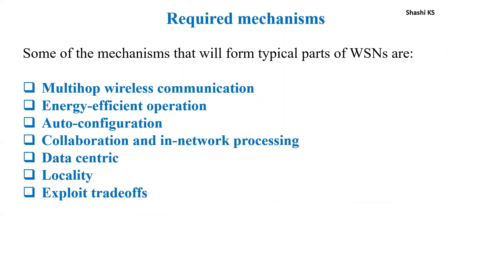Now we move on to the required mechanisms for a wireless sensor network. The mechanisms typical of WSNs are: multi-hop wireless communication, energy efficient operation, auto-configuration, collaboration and in-network processing, data-centric operation, locality of reference, and exploiting trade-offs.